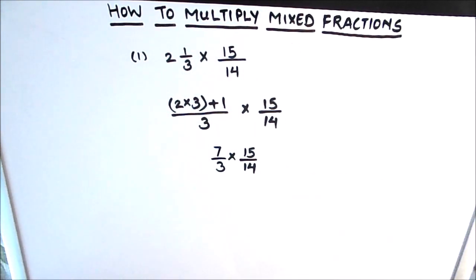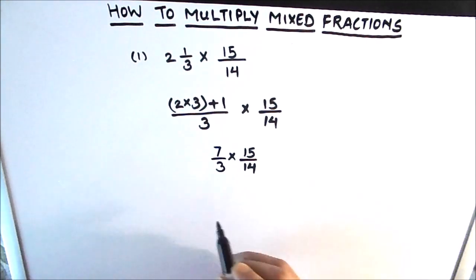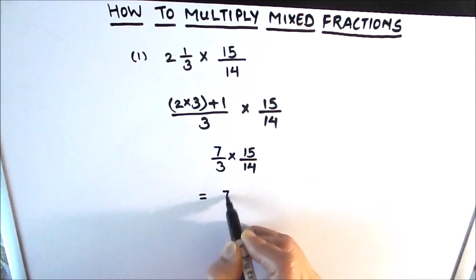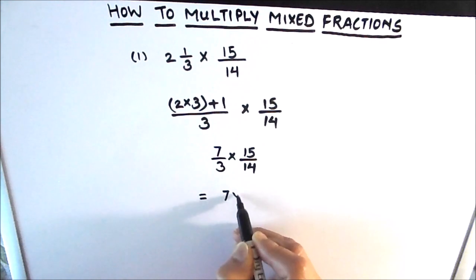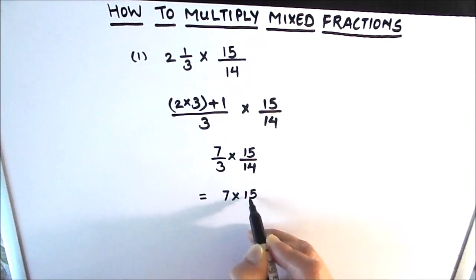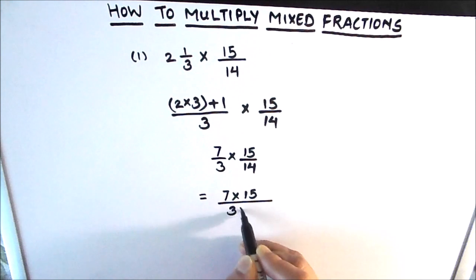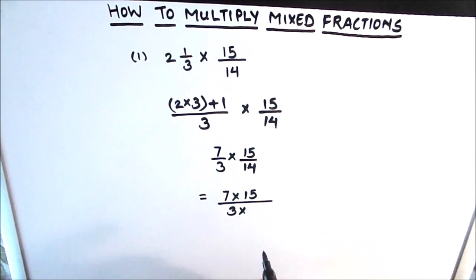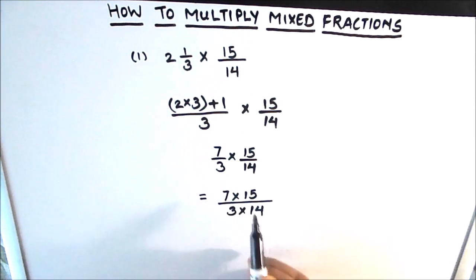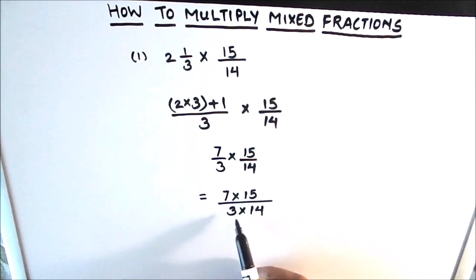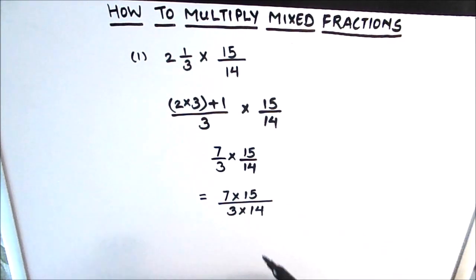We now have two improper fractions getting multiplied. When we multiply fractions, the numerator of one fraction gets multiplied with the numerator of the other fraction, and the denominator of one fraction gets multiplied with the denominator of the other fraction. So that's going to be 7 times 15 divided by 3 times 14.